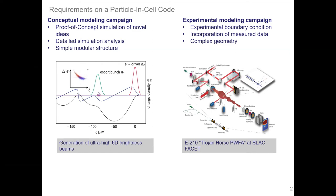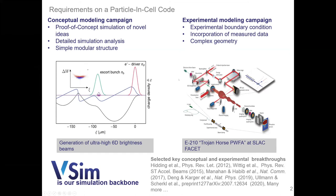From our group's perspective, we have one pillar developing proof-of-concept ideas in PIC simulations, requiring detailed simulation analysis and a simple modular structure where we can assemble the underlying system. At the same time, we need a simulation tool that can take into account experimental boundary conditions, incorporate measured data, complex geometry, and realistic initial conditions. VSim has been our simulation backbone across all pillars, supporting many publications, enabling both experimental modeling and the design of new experiments in a phenomenological way.